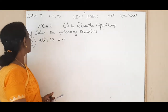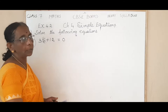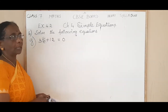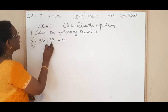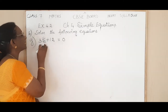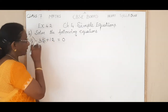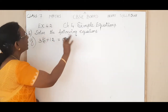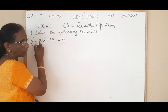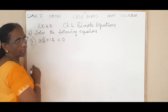The sum is: 3s plus 12 is equal to 0. Here we have to eliminate 12 first, then 3. Because it is 3s plus 12, this addition should be eliminated, and then you have to come to this 3 — the 3 in 3s should be eliminated.